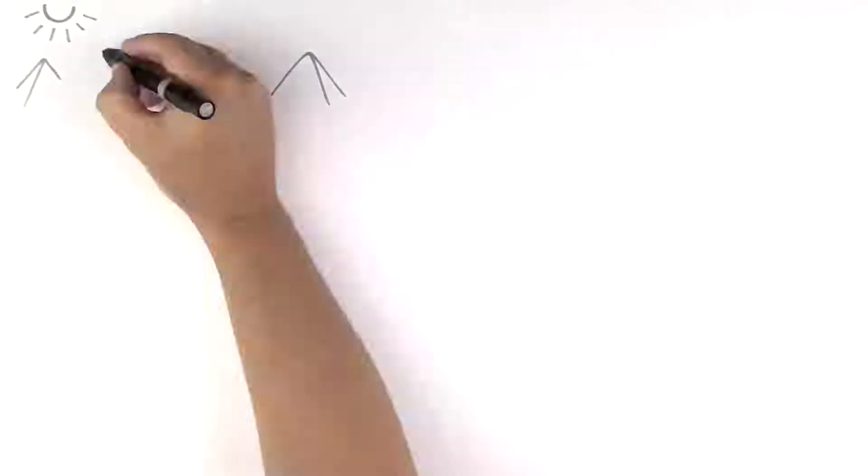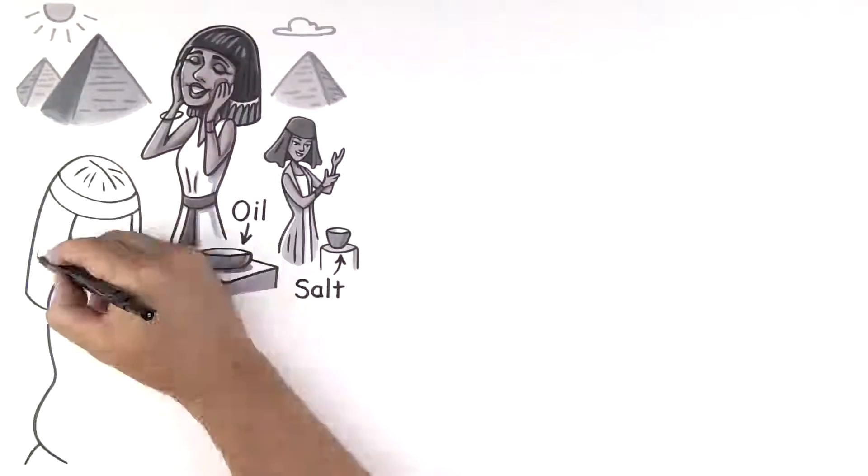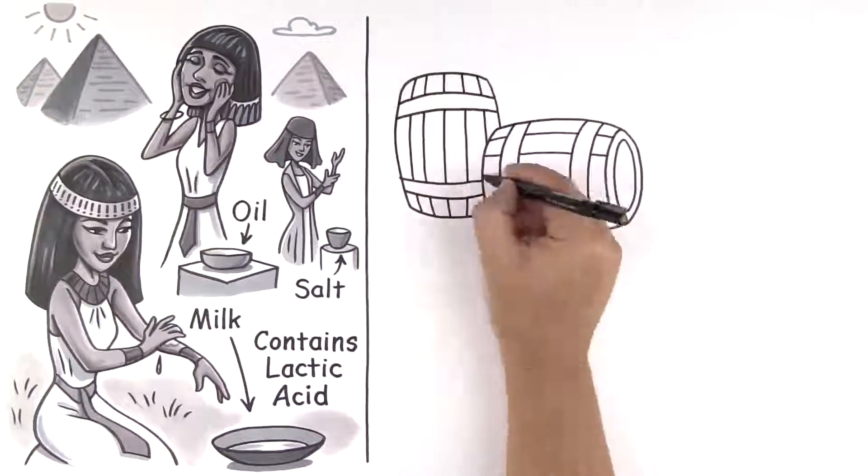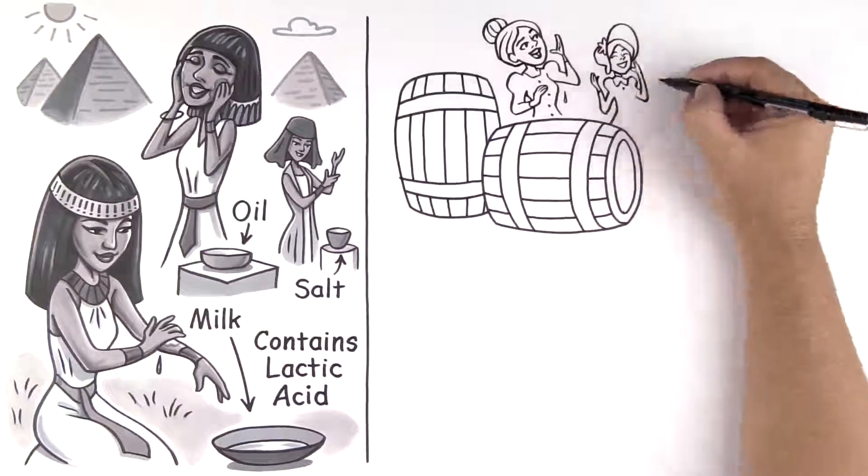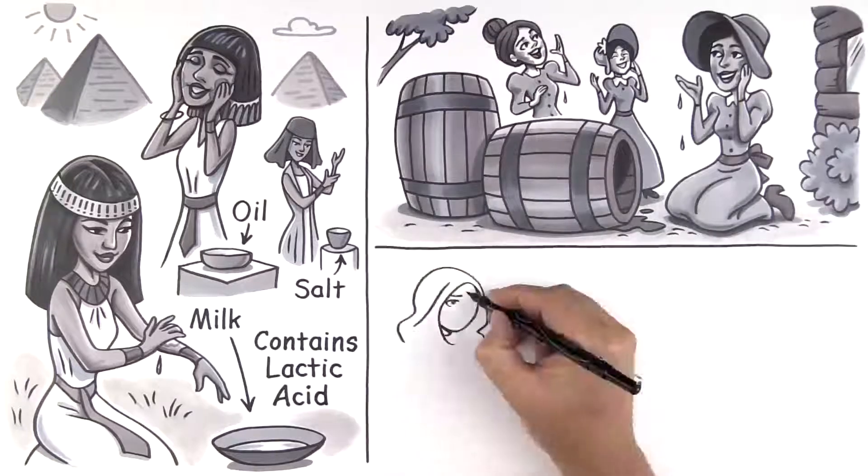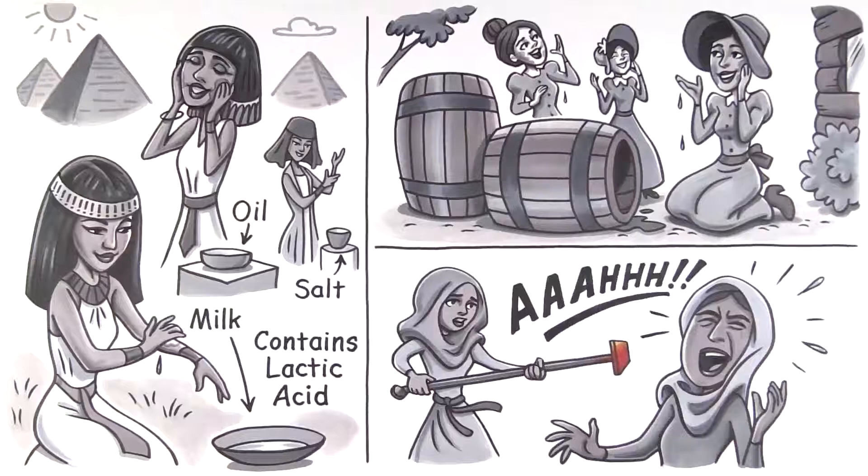Using chemicals on our skin is nothing new. In fact, the ancient Egyptians used oils, salt, and milk containing lactic acid to improve the quality of their skin. Other women rubbed fermented grape skins from the bottom of wine barrels over their skin to enhance its radiance. The Turks even used fire to singe the skin in an effort to induce exfoliation.